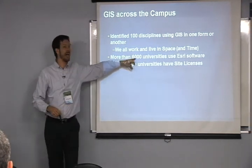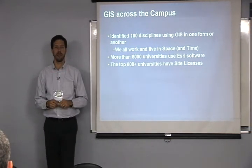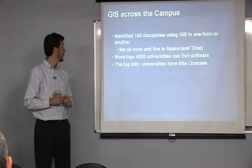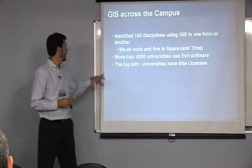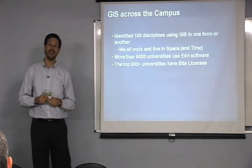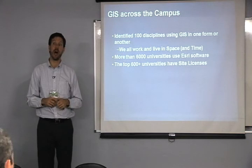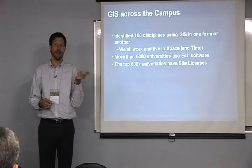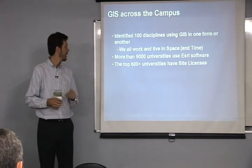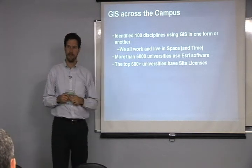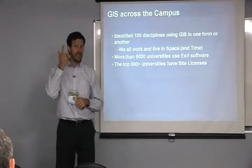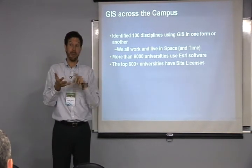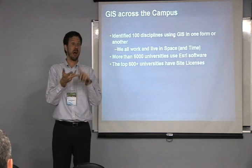Now we have more than 6,000 universities using ESRI software around the world. More than 600 of the top universities — those that have become leaders — have adopted these site licenses because they see that GIS is for everyone: for saving money, being more efficient, and solving problems.